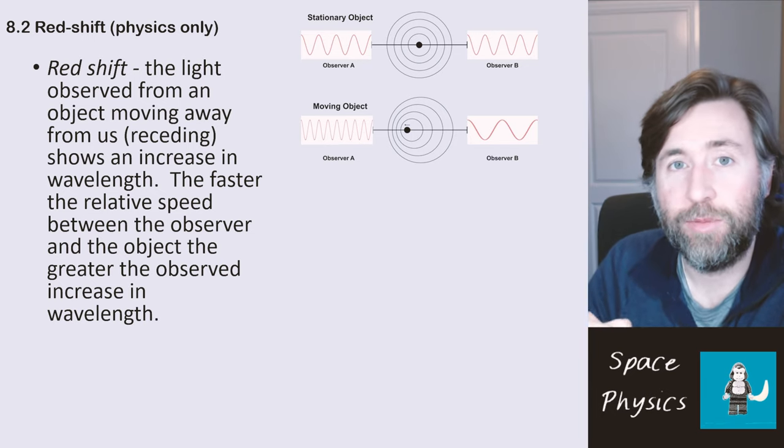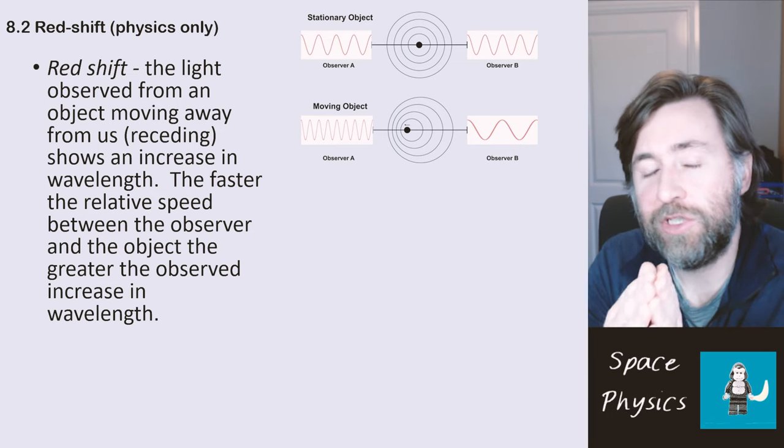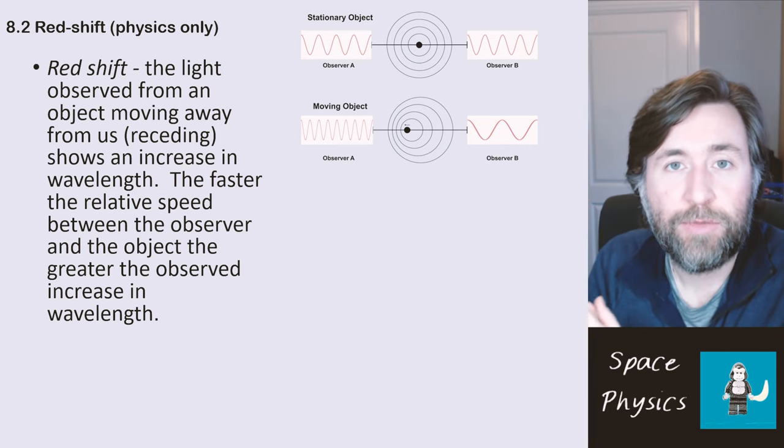If an object was coming towards us, we would see a blue shift. We would see the light visibly shift to the higher frequency, lower wavelength end of the spectrum, the blue end.